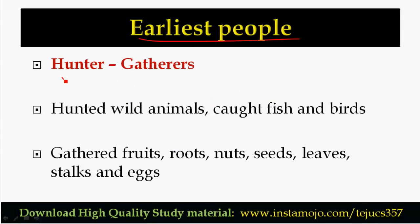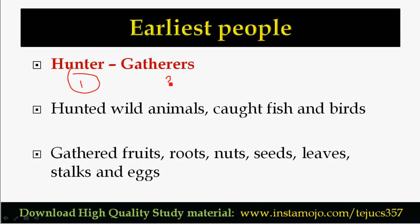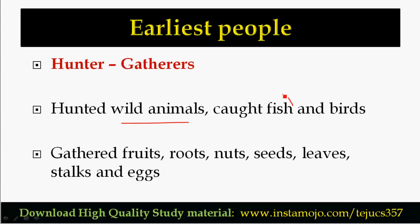The earliest people were basically hunters and gatherers. We choose hunting as a first priority and food gathering as a second priority. We will be interested in hunting, and the main target is waiting for wild animals, fishes, and birds.